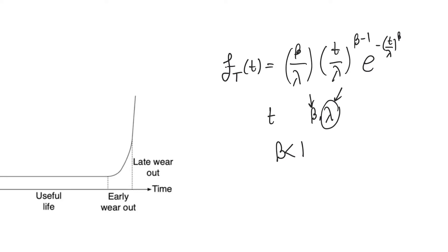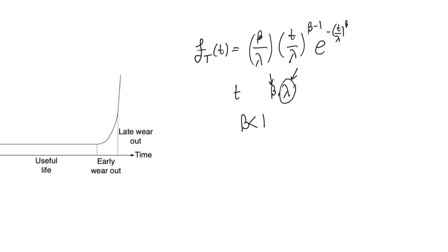If beta is less than 1, the function describes failures in infant mortality, where the failure rate starts really high at lower t and then drops quickly as t increases. With beta higher than 1, specifically around 3, the function reduces to a Gaussian distribution — a normal distribution. When beta equals 3, this signifies the start of the wear-out stage. As beta increases above 3, the probability of failure increases sharply, and with beta around 10, it almost becomes certain that all components will fail, indicating late wear-out.